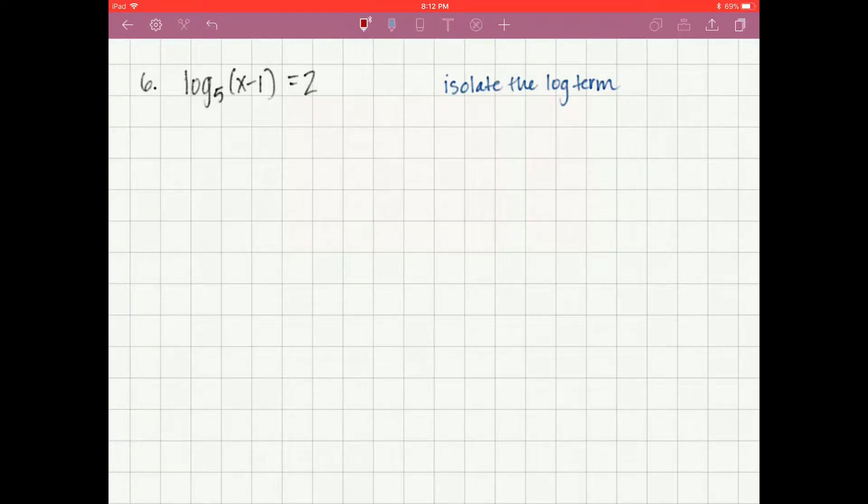To solve this log equation, we only have one log term, so we want to isolate that log term. In this case, the equation is already given to us with the log term isolated equal to a constant. So after we isolate the log term, we want to write in exponential form.